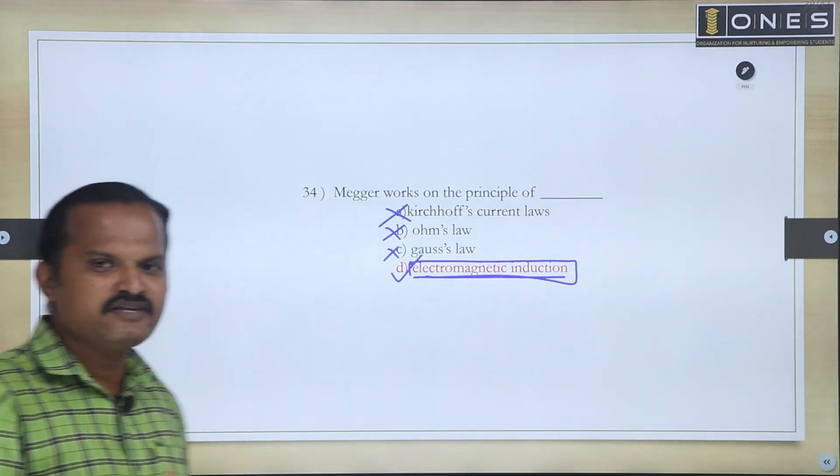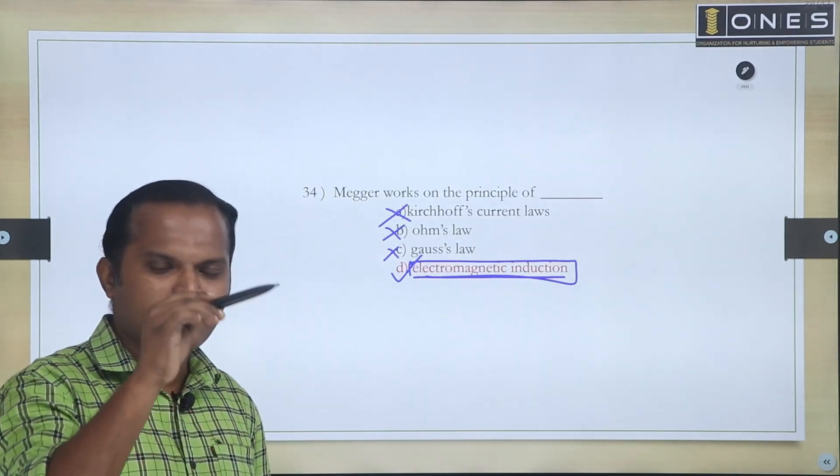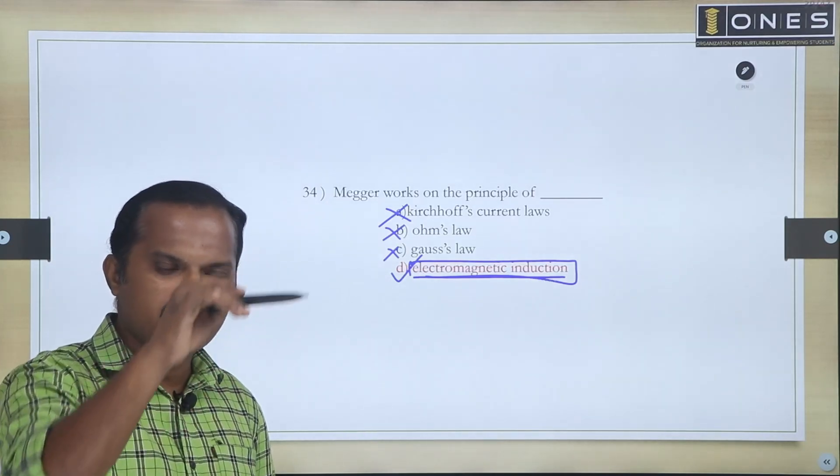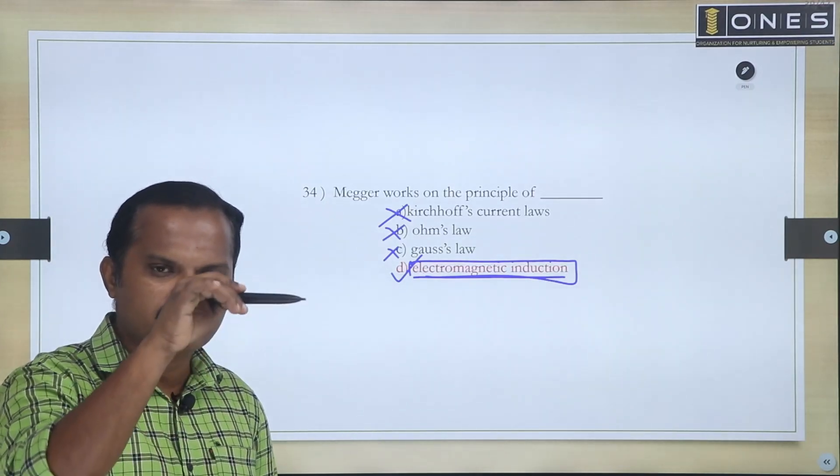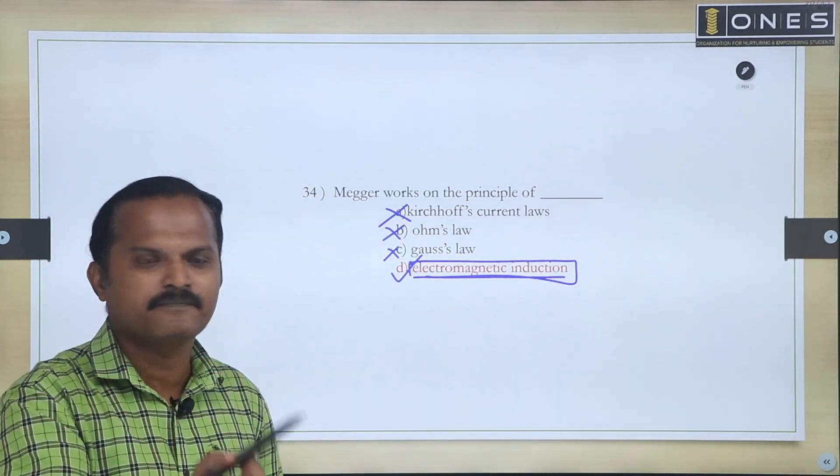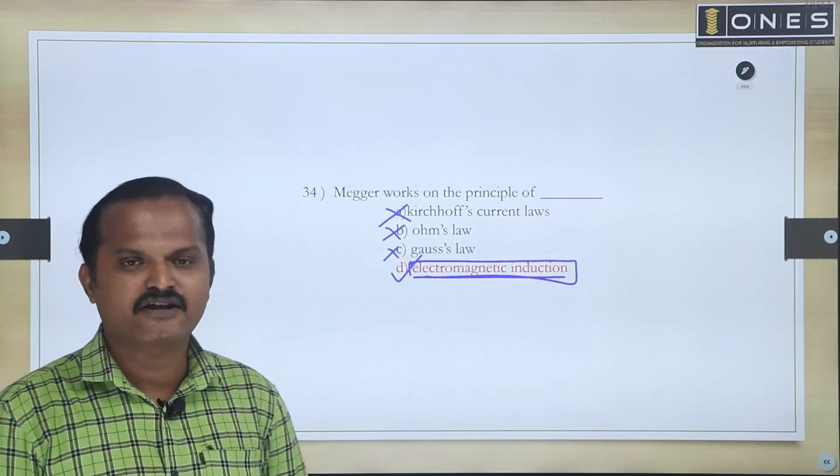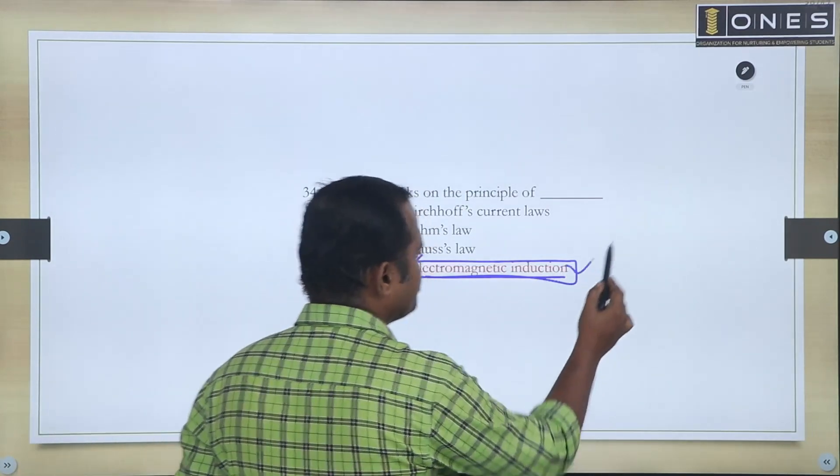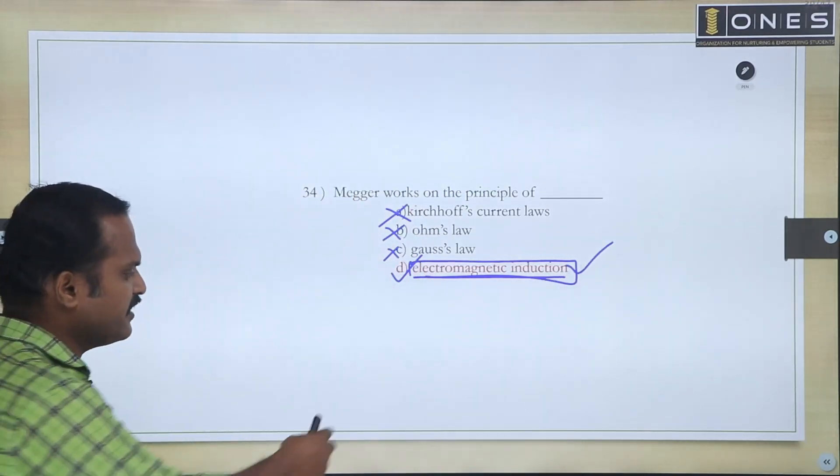Coil inducing in the field, current passing down, that current is proportional to flux generated. That flux interaction between coil one and coil two develops torque. So in Megger case, the basic working principle is by electromagnetic induction.